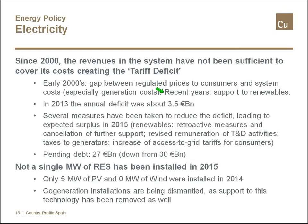In more recent years, especially after 2007, following strong promotion of renewables, the support scheme for renewables added to this deficit. The debt grew to 30 billion euros, which is quite unsustainable for this country. Even in 2013 the debt was still increasing, with a deficit of 3.5 billion euros that year. This explains the drastic measures taken to reduce the deficit. Fortunately, several measures have been taken, and in 2015 a surplus is expected, meaning the deficit has stopped — though the pending debt is still 27 billion euros.